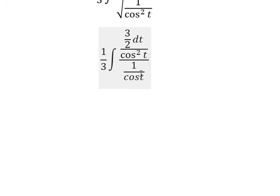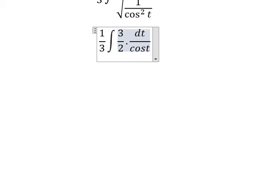Cos squared t simplifies with cos t. Now you will get about 3 over 2 multiply with dt over cos t. We simplify 3 and 3, and we get about 1 over 2.